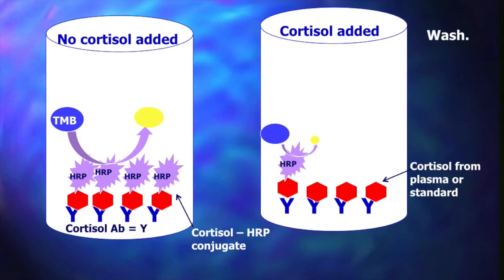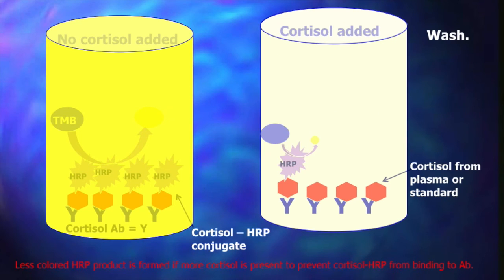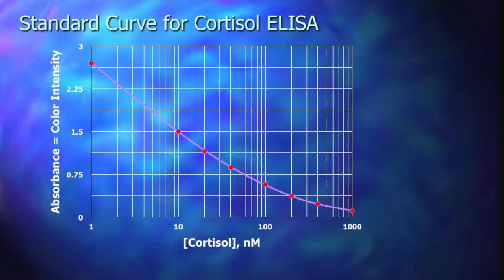The results of this assay will actually be the opposite from the sandwich assay. The higher the cortisol, the lighter the color. We'll also take a look at the standard curve of this one, and we'll see that it is the opposite of the last standard curve we saw.